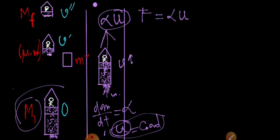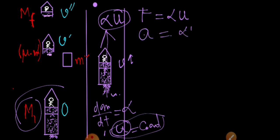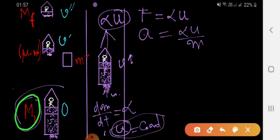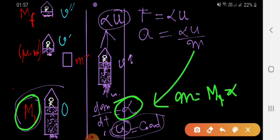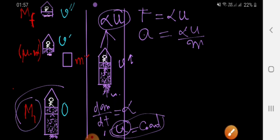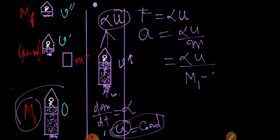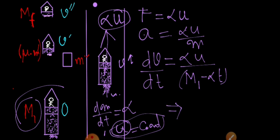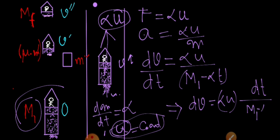Writing the equation of motion: F_net = alpha·u (constant), so acceleration a = alpha·u / m. But m is not constant — it is a variable. The initial mass was m1 and fuel burns at rate alpha, so m = m1 - alpha·t at any moment. Substituting: a = dv/dt = alpha·u / (m1 - alpha·t). Setting up and rearranging gives dv = alpha·u · dt / (m1 - alpha·t).